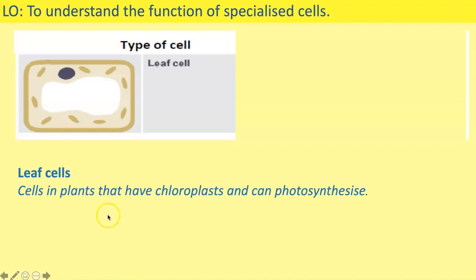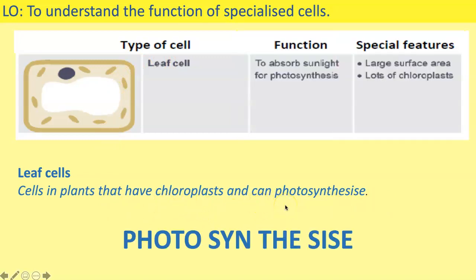The next type of cell is also found in a plant — the leaf cell. Leaf cells have chloroplasts and are found on the upper part of the plant in the sunlight, so they can absorb the light needed for photosynthesis to take place. Their function is to absorb sunlight for photosynthesis. Their special features are a large surface area and lots of chloroplasts, meaning they can absorb as much light as possible. Pause the video, make your card sort — diagram, name, function, structure — and do that now.